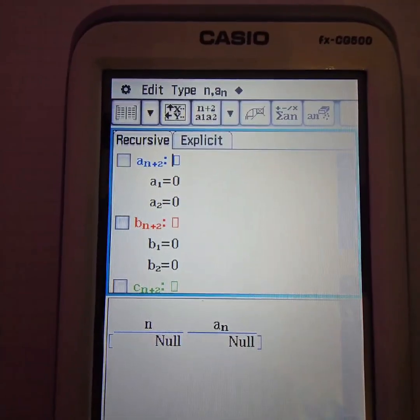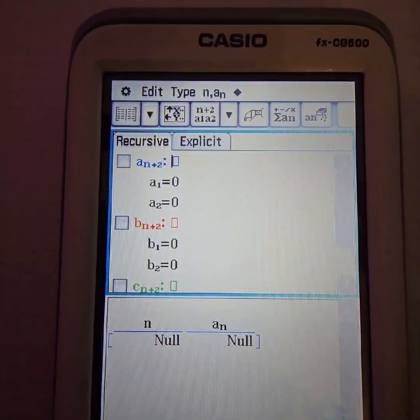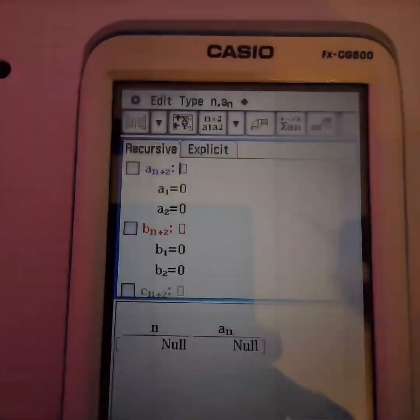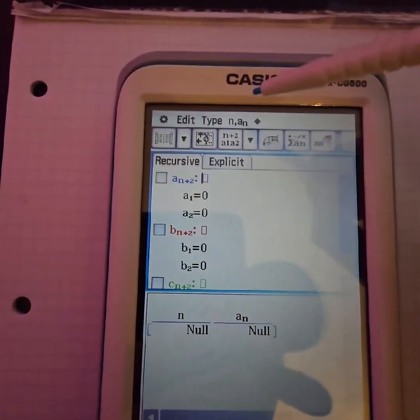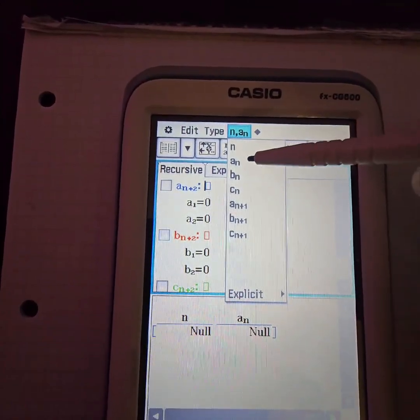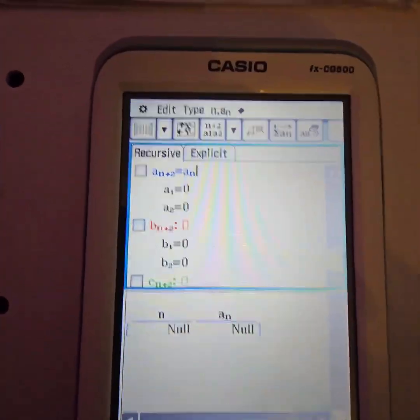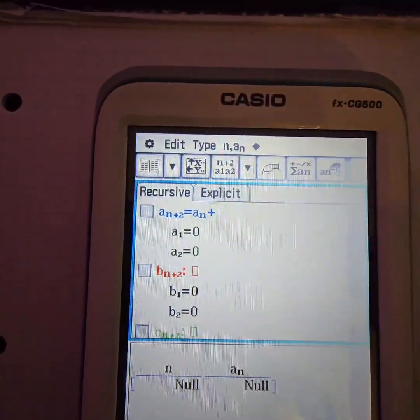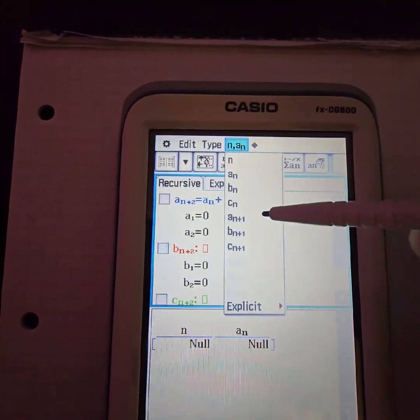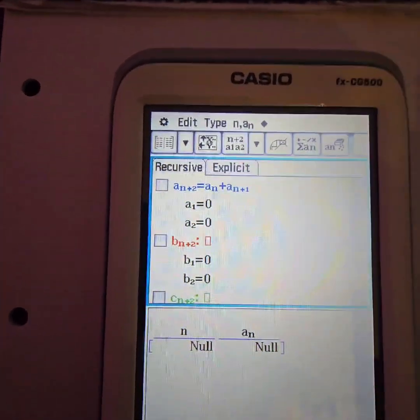The next step is I want AN+2 equals AN plus AN+1. So I click over here and I select AN and then I add by clicking on this again AN+1.